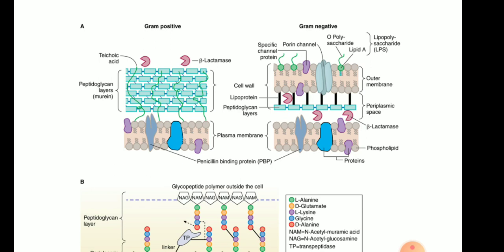In gram negative bacteria you will see a periplasmic space and the beta-lactamase is present in the periplasmic space which is responsible for the destruction of the structure of penicillin.